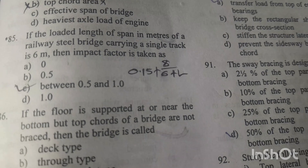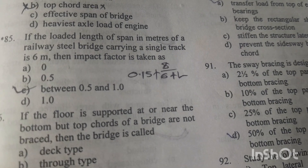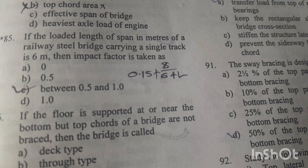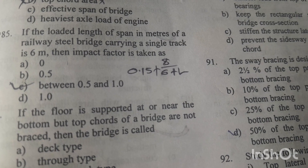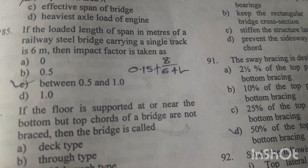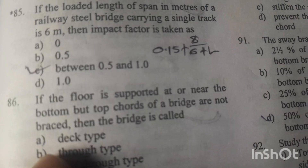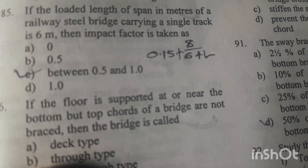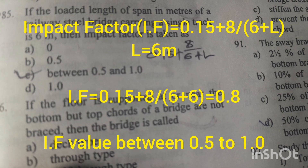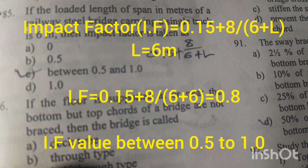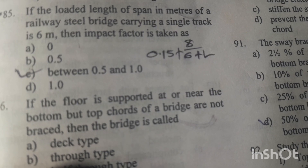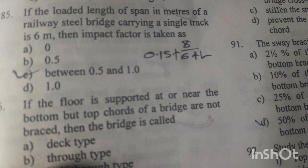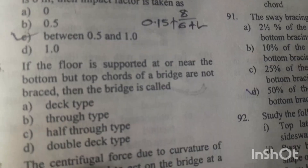Question number 85: If the loaded length of span of a railway steel bridge carrying a single track is 6 meters, then impact factor is taken as: formula = 0.15 + 8/(6 + L), where L = 6 m. If we calculate, the value will be between 0.5 and 1. Option C is the right answer.